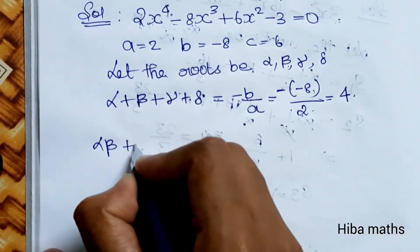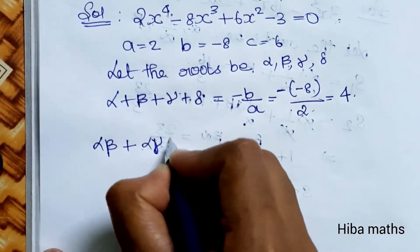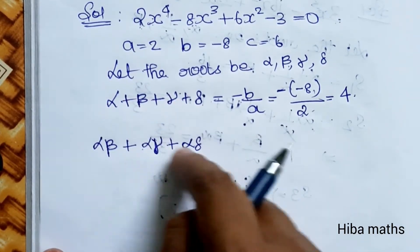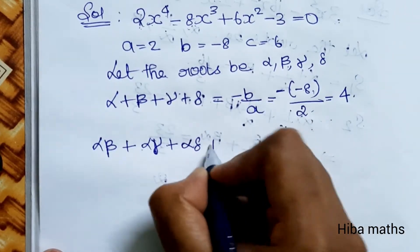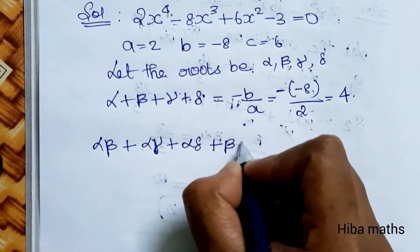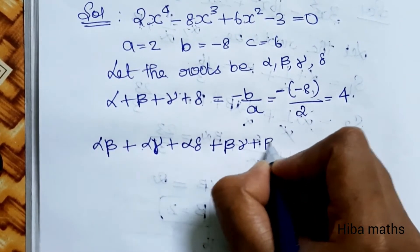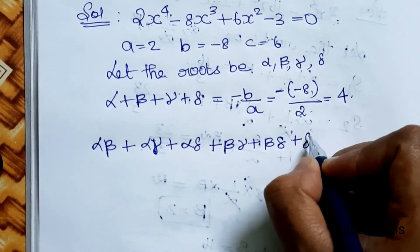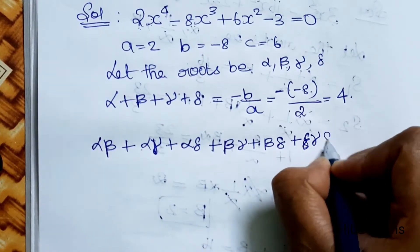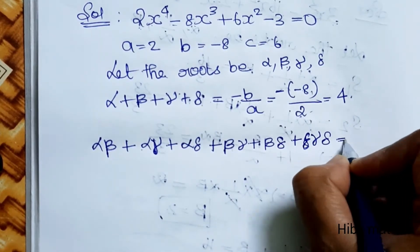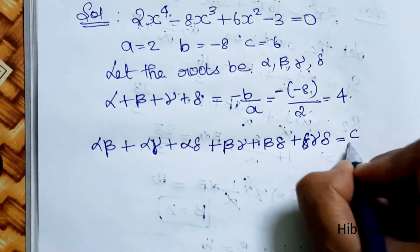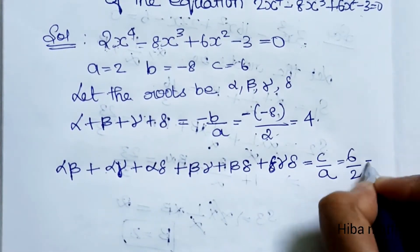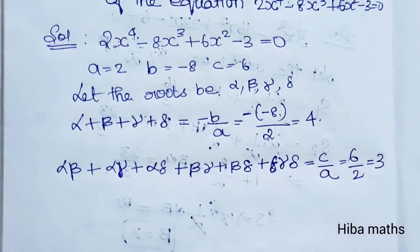The sum of products of pairs — alpha into beta plus alpha into gamma plus alpha into delta plus beta into gamma plus beta into delta plus gamma into delta — is equal to c by a. c equals 6, a equals 2, which gives 6 by 2 equal to 3.